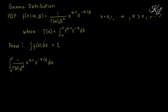In order to simplify this, I want to make this similar to our definition of the gamma function, so that I can remove the integral and replace it with gamma of alpha. So let me set t equal to x over beta. Then we can have x equals beta times t, and dx equals beta dt.